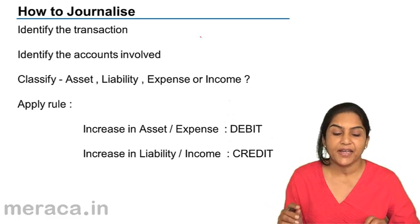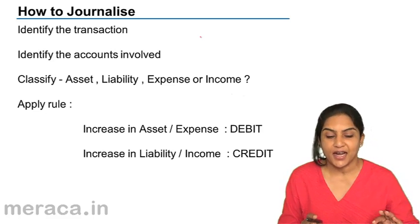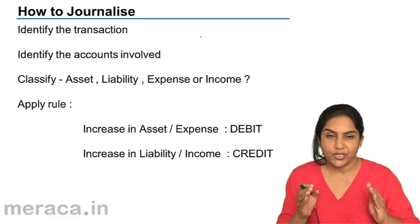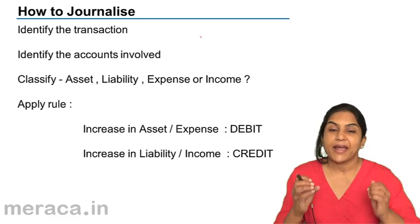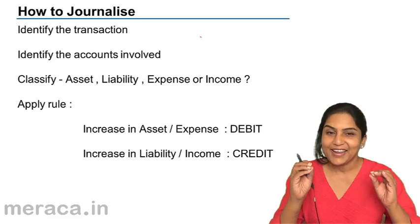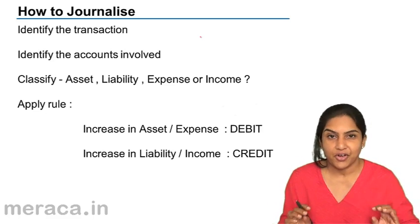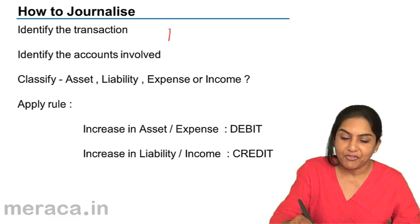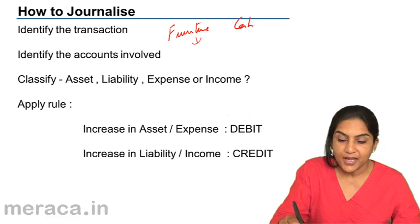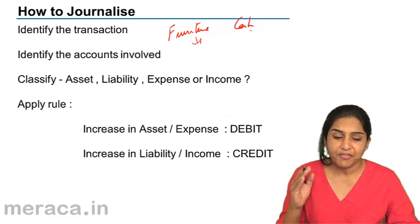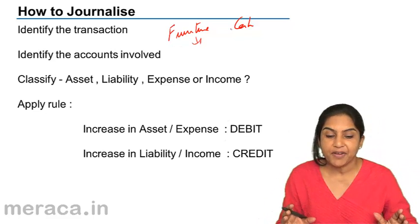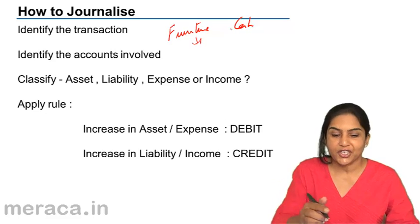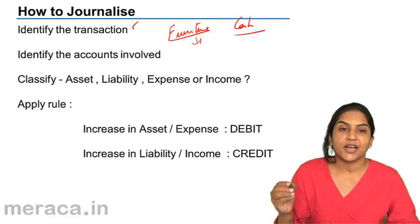First and foremost, we will identify the transaction and identify the accounts involved. Once you know what the transaction is that we need to record, we will then identify the accounts involved. For example, purchasing furniture for cash — what are the two sides involved? You will have furniture and you will have cash. Furniture comes in and cash goes out. So, identify the accounts involved. The transaction is the purchase of furniture for cash, and the accounts involved are furniture and cash.